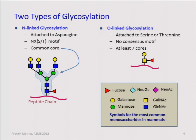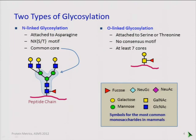N-glycans tend to be fairly big and always start with a five-monosaccharide core. From the mass spec point of view, the two circles are equivalent — they have exactly the same mass; they're both hexose. And the two little boxes are equivalent — they're both HexNAc, exactly the same mass again.